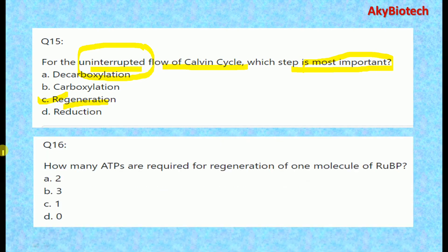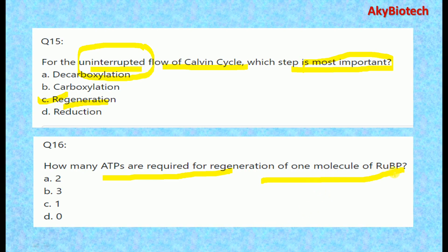Question sixteen: How many ATPs are required for the regeneration of one molecule of RuBP (ribulose bisphosphate)? The correct answer is one ATP is required for the regeneration of one molecule of RuBP.